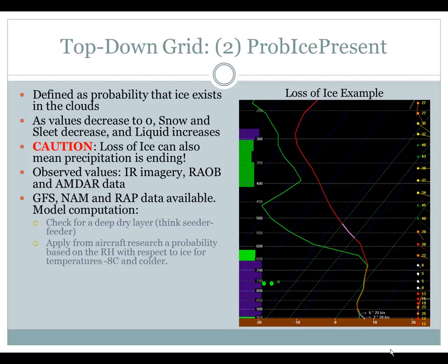Next, aircraft research is applied to create a probability based on the relative humidity with respect to ice for temperatures of minus 8°C and colder. For example, on the right, you will notice that rain — that area colder than minus 8°C — the sounding is pretty well dry. There might be a little bit right around minus 8 that could be saturated or close to saturated with respect to ice, but for the rest it is dry. So this example is pretty much 0% in terms of prob ice present.